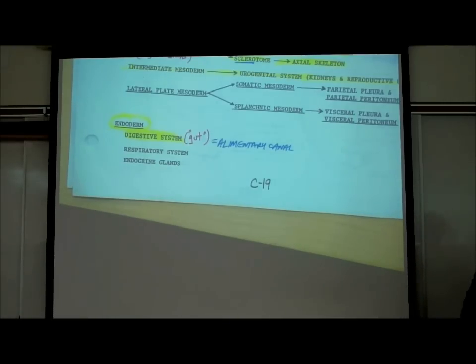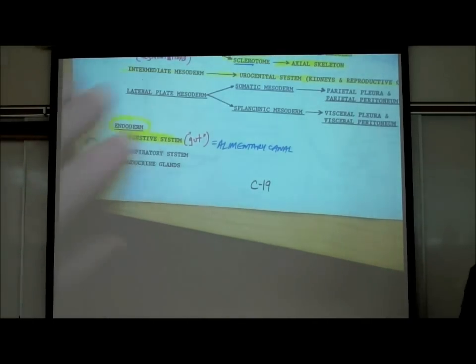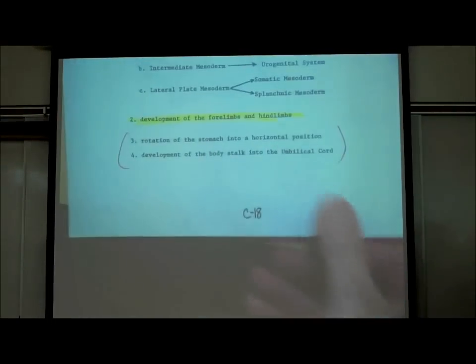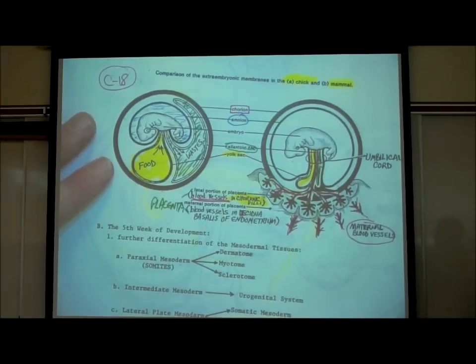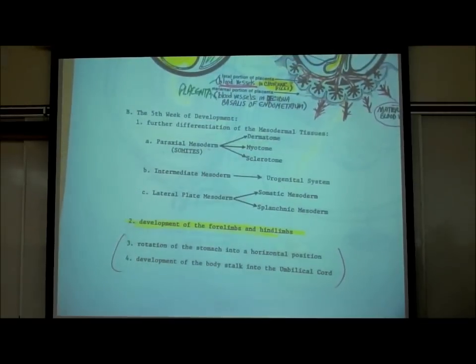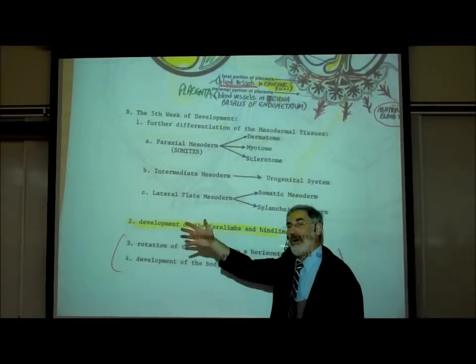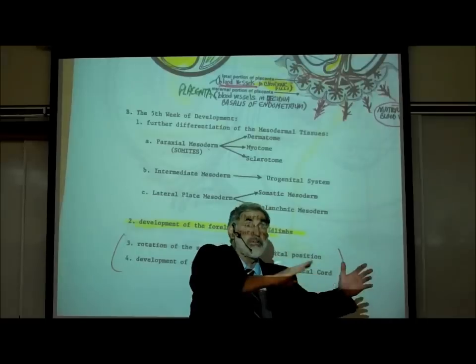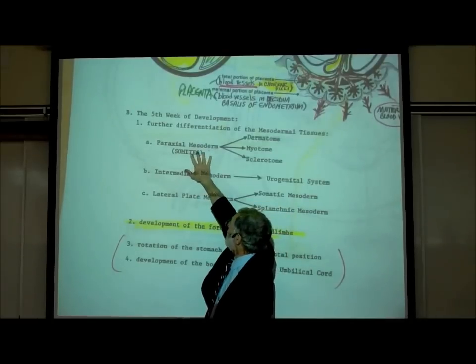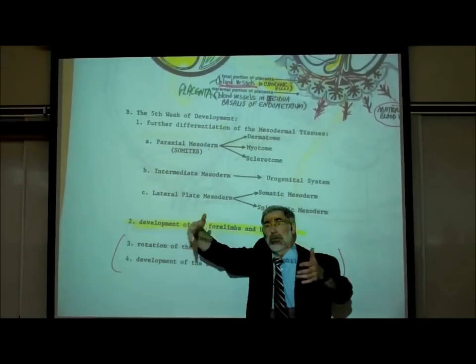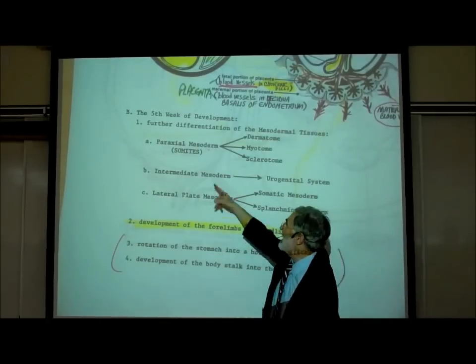On page C18, this was already covered — just reminding you about all these sacs. Now, about the paraxial mesoderm and somites: you'll notice the fifth week is a continuation of the fourth. It's not like everything I told you about the fourth week is finished — it's still happening. The paraxial mesoderm is becoming dermatome, myotome, and sclerotome, becoming dermis, muscles, and axial skeleton. I wrote the word somites — see page C20.